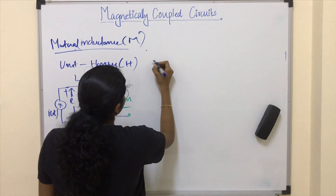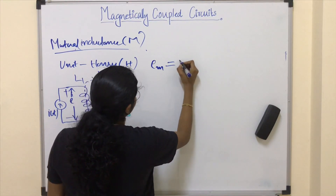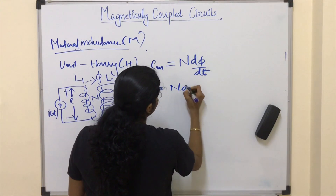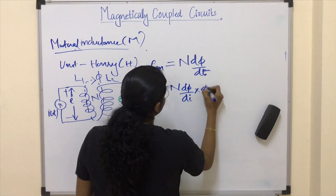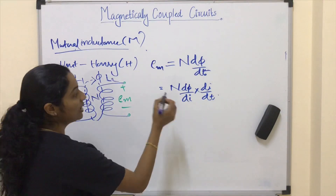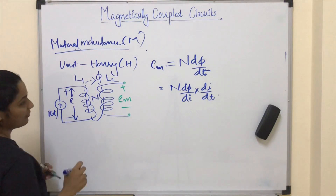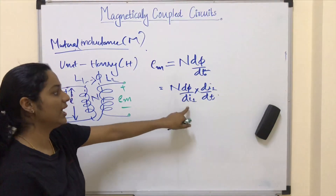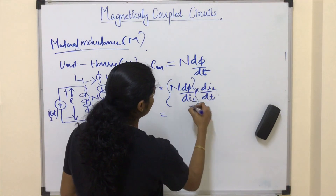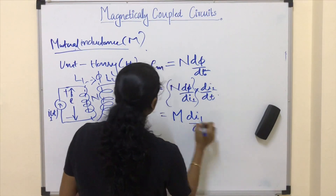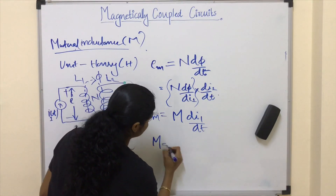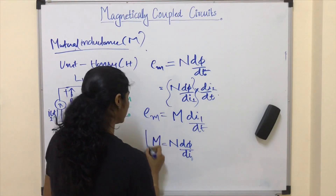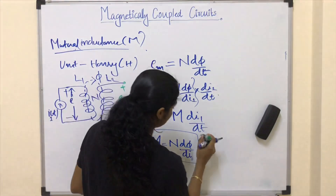In the same way as we derived self inductance, we can derive mutual inductance. According to Faraday's law, the mutual induced EMF is e = N · dΦ/dt = N · (dΦ/di) · (di/dt). Note that this current i is the current passing through the first coil, i1. Replacing N · dΦ/di1 with M gives e = M · di1/dt, where M is the mutual inductance: M = N · dΦ/di1.